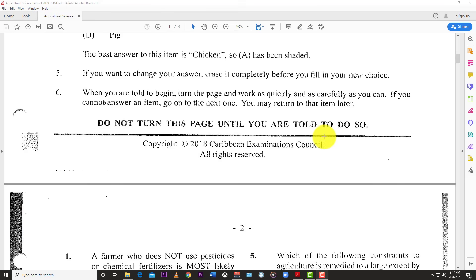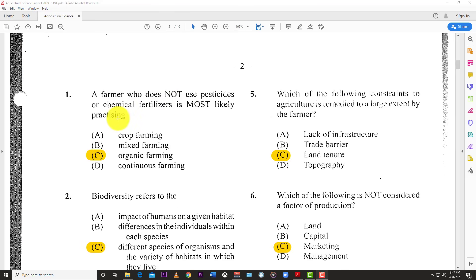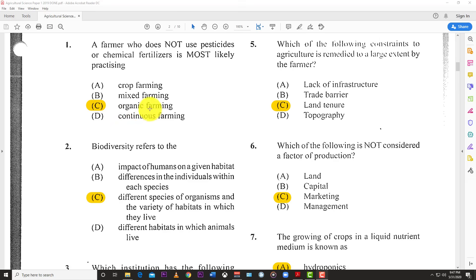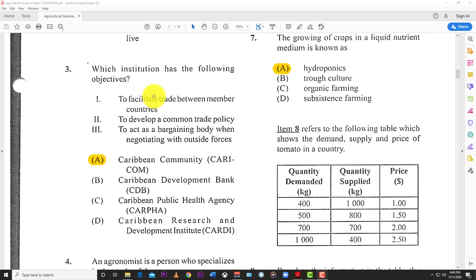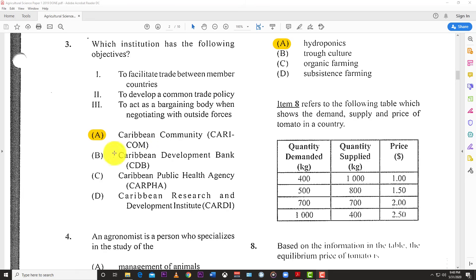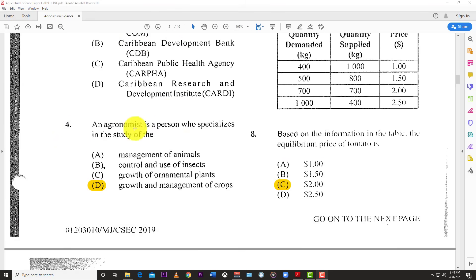Number 1: A farmer who does not use pesticides or chemical fertilizers is most likely practicing organic farming. Organic farming uses little to no artificial inputs. Number 2: Biodiversity refers to the different species of organisms and the variety of habitats in which they live. Number 3: Which institution has the following objectives - to facilitate trade between member countries, develop common trade policy, and act as a bargaining body when negotiating with outside forces? The answer is CARICOM, the Caribbean Community.